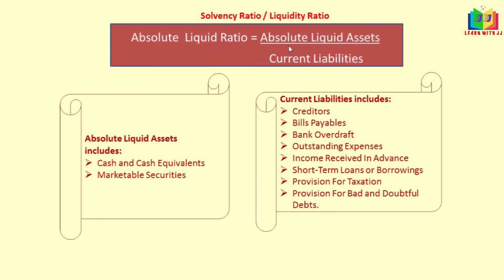For absolute liquid ratio, absolute liquid assets divided by current liabilities is the formula. Absolute liquid assets are cash and cash equivalents and marketable securities. We can also use liquid liabilities — that is, current liabilities minus bank overdraft — but normally we use current liabilities in the denominator.